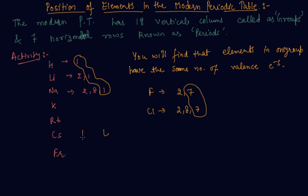Let's say period 2. The elements are lithium, beryllium, boron, carbon, nitrogen, oxygen, fluorine, and neon present in the second period.